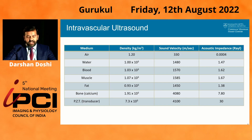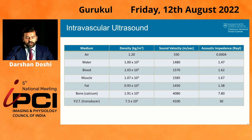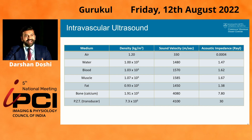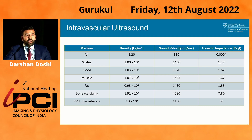How dark or bright something appears is strongly predicated on the acoustic impedance of what you're imaging. Taking common mediums — air, water, blood, muscle, fat, bone, and the transducer element — acoustic impedance equals density multiplied by velocity. Air has the lowest acoustic impedance, so ultrasound waves don't reflect, and air appears black on IVUS. Something with much higher acoustic impedance, such as calcium, produces much greater reflection and therefore appears much brighter.